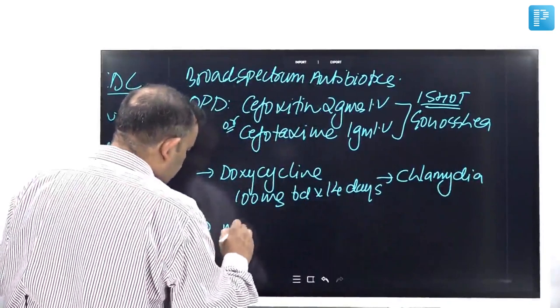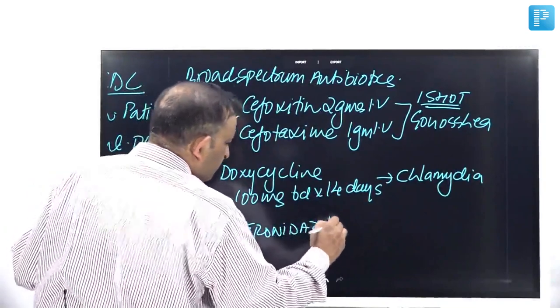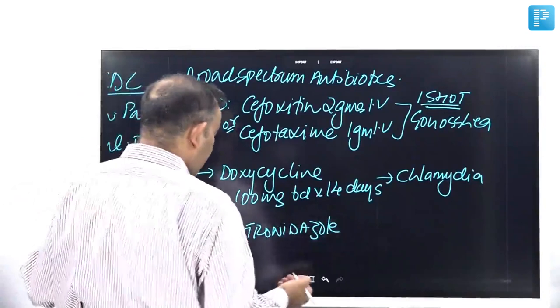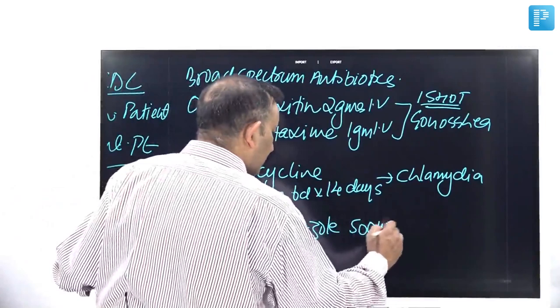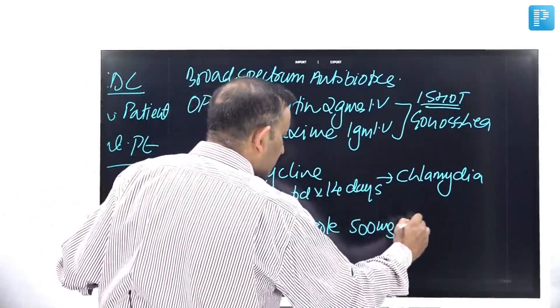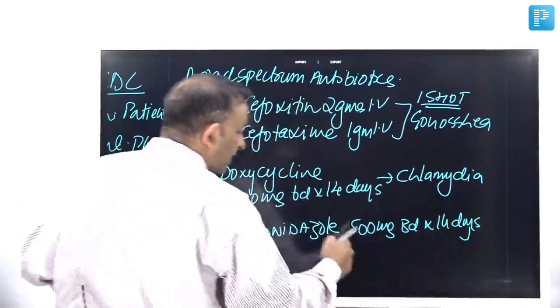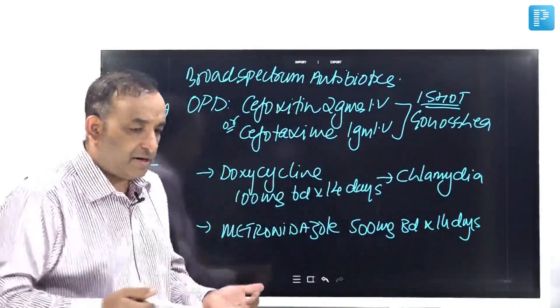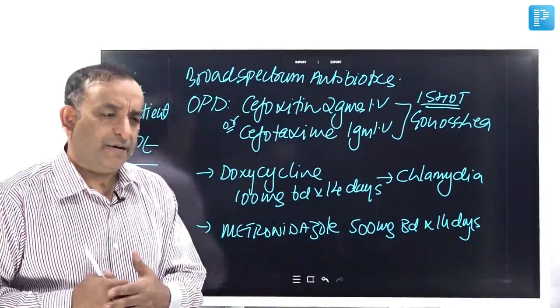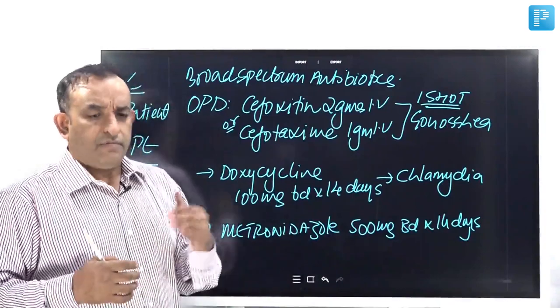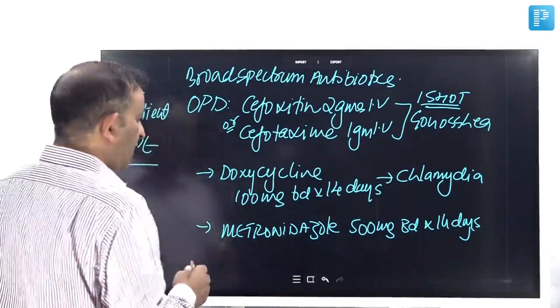And you can give Metronidazole, which is sold as Flagyl most of the time in our country, 500 milligrams twice a day again into 14 days. Now, look here. In our country, we do not get the 500 milligram dose. We get the 400 milligram dose. So, I am telling you the CDC regime. In our country, we have 400 milligram tablets. So, if you really want to give PID treatment, we can give 400 milligrams twice a day. It gives us decent results.